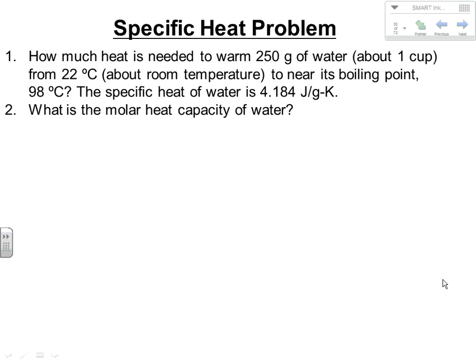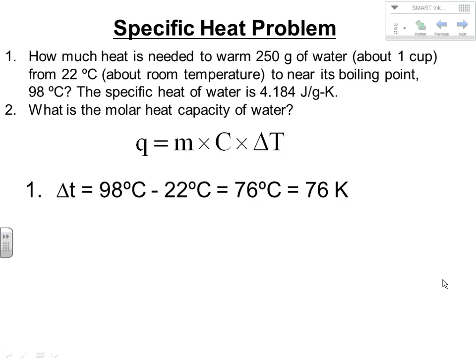We'll look at how much heat is required and then calculate the molar heat capacity. Using Q = mcΔT: ΔT = T_final − T_initial = 98 − 22 = positive 76 degrees Celsius, which is the same as positive 76 Kelvin. It's positive because we had to put heat into the system — we warmed it up, so energy was going into the system, giving a positive value.